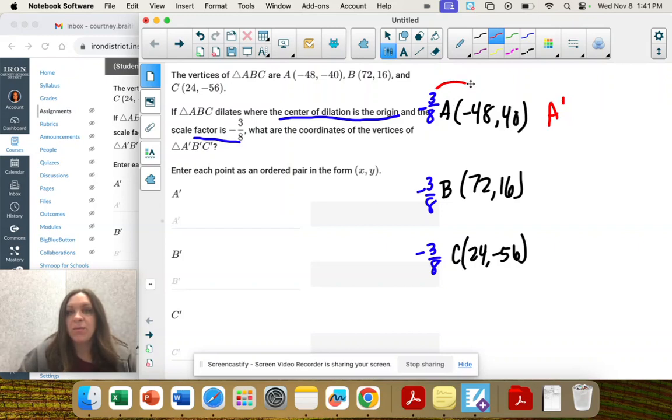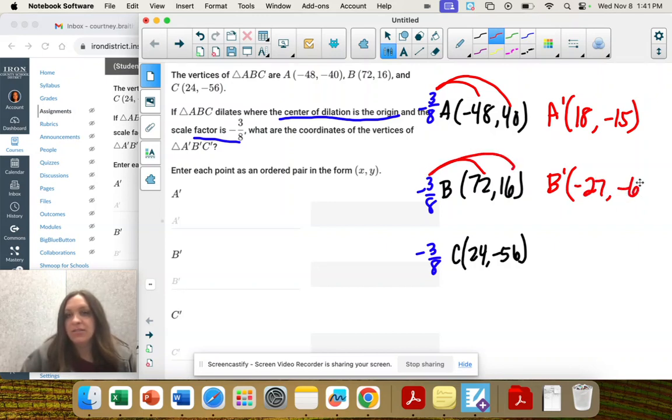So A prime would be 18, and negative 3 eighths times 40 is negative 15. B prime would be negative 27 and negative 6. C prime, I'm just multiplying these, that would be negative 9 and positive 21.